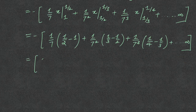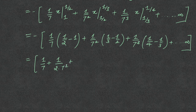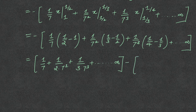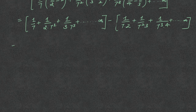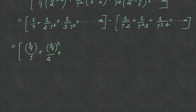On simplifying, this becomes: minus of 1 upon 7 plus 1 upon (2 times 7 squared) plus 1 upon (3 times 7 cubed) plus so on. Rewriting, this is minus of: 1 upon 7 plus 1 upon 7 squared over 2 plus 1 upon 7 cubed over 3 up to infinity.